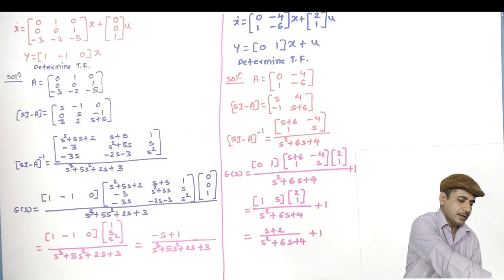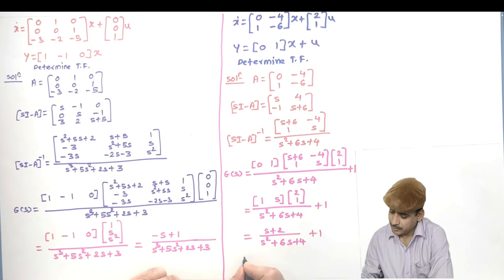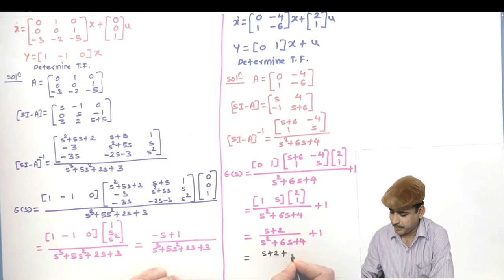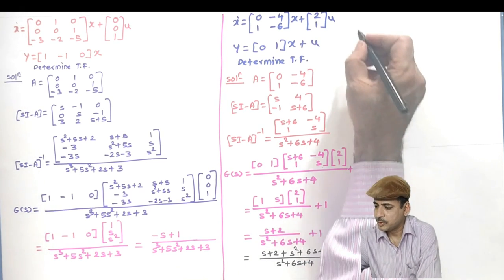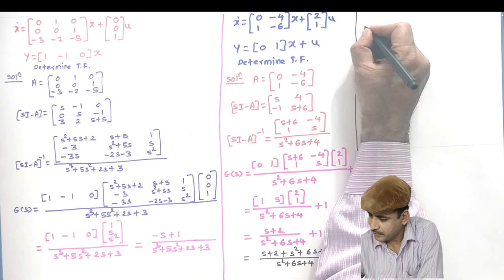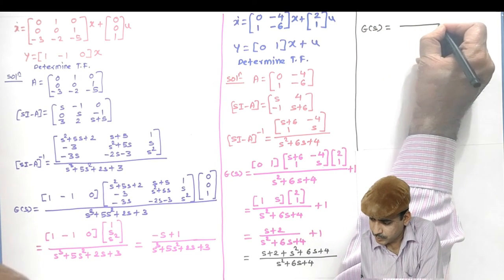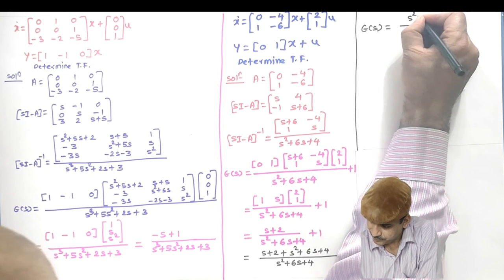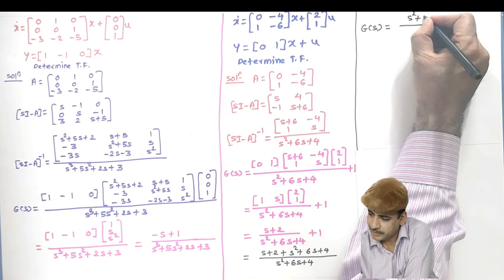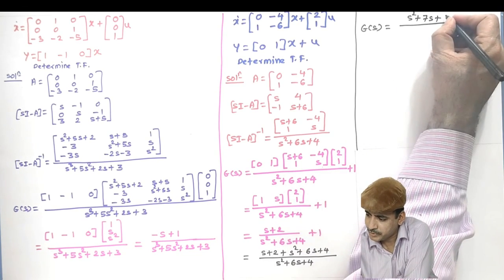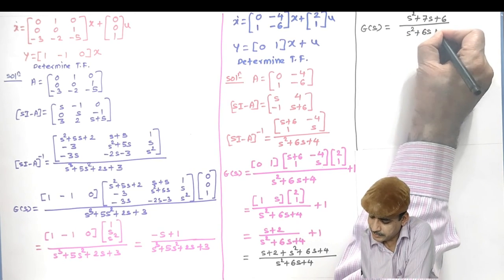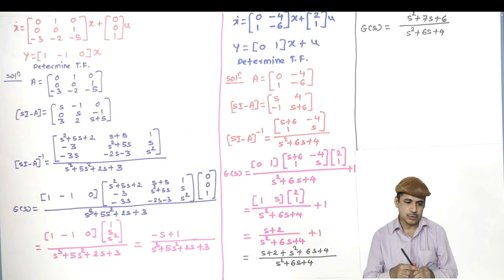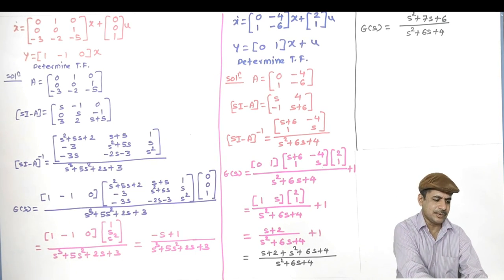Adding D = 1: G(s) = (s+2)/(s²+6s+4) + 1 = [(s+2) + (s²+6s+4)] / (s²+6s+4) = (s²+7s+6) / ... the instructor states the final answer as G(s) = (s²+6s+7)/(s²+6s+4) — combining the numerator terms s² + (6+1)s + (4+2+... wait, instructor states: (s+2) + (s²+6s+4) = s²+7s+6... but the instructor writes S²+6S+7, S+4. Final answer: G(s) = (s²+6s+7)/(s²+6s+4). The concept is well illustrated.